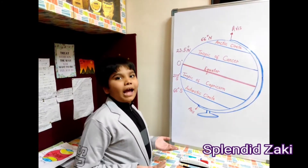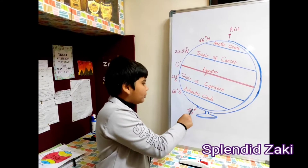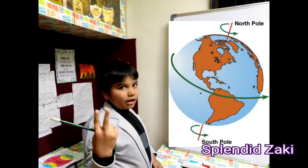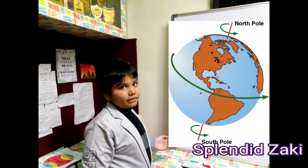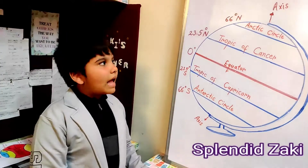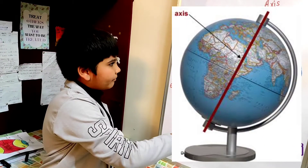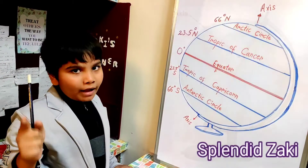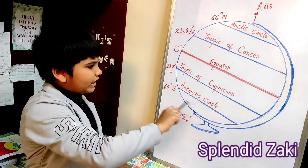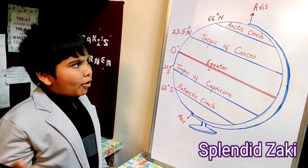Let's begin our journey with North Pole and South Pole. North Pole and South Pole are the two ends of the earth's axis. They are the top and bottom of a globe. As you all can see, this is the axis of the globe. Please remember, my friends, these lines that I draw are the imaginary lines drawn around the globe.